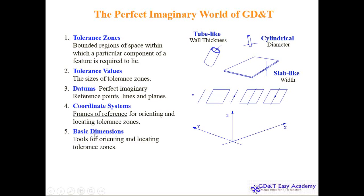If you talk about the basic dimension inside your drawing, this basic dimension never changes — you cannot apply tolerance to a basic dimension. For example, a particular cylinder's location in the X and Y direction is absolute, so that pin or hole will get assembled to this. You cannot apply tolerance to it — this is a basic dimension.